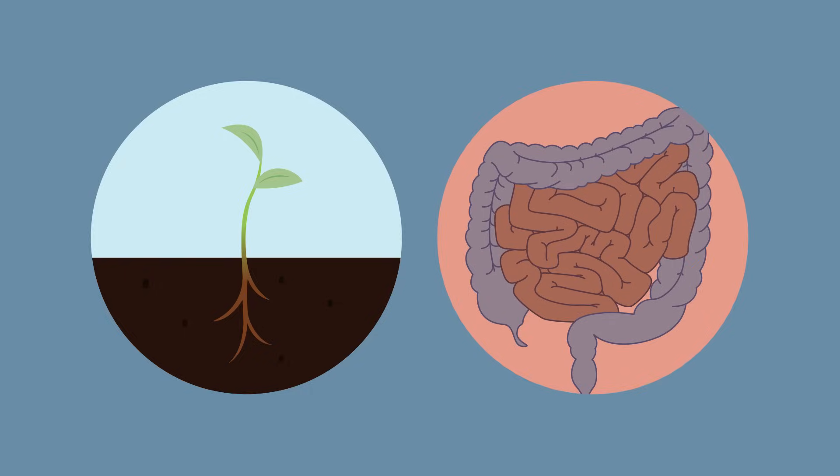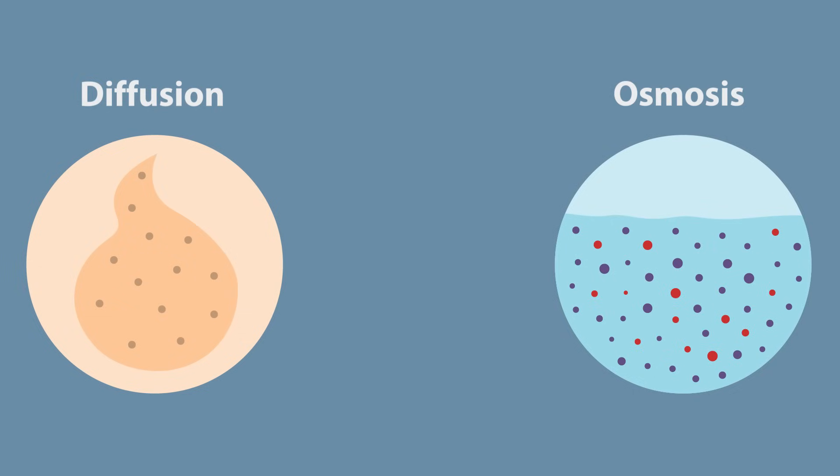The absorption of water by plant roots and the absorption of water in the small intestine and the colon all use osmosis. So we know all about the movement of gases and water, but what is active transport? Watch part two to learn about active transport.